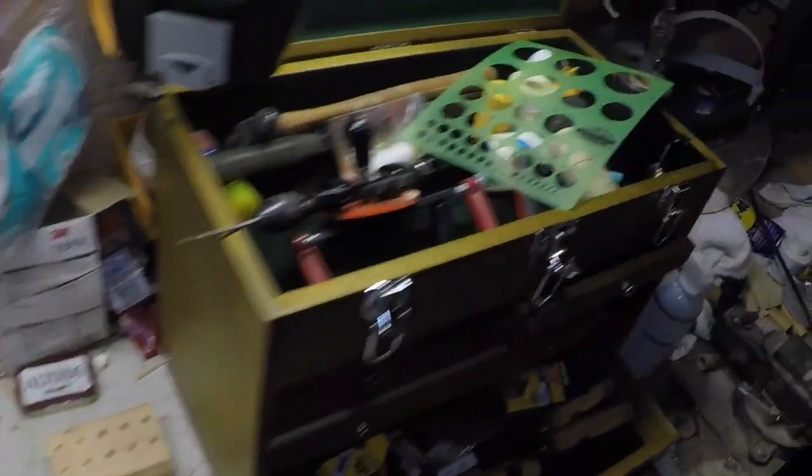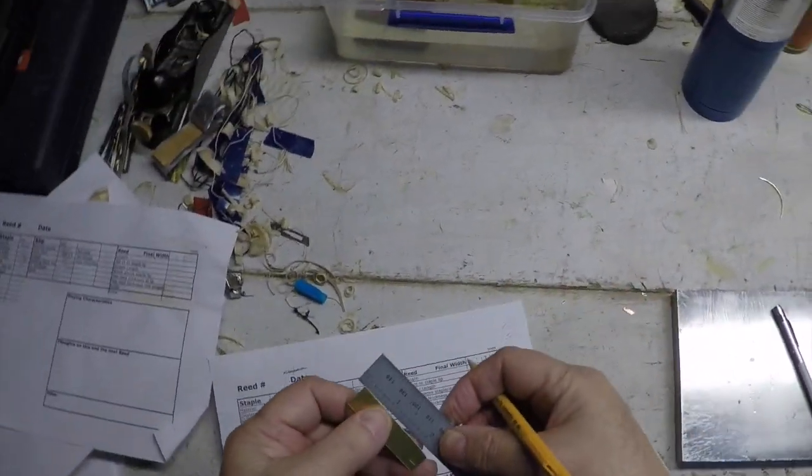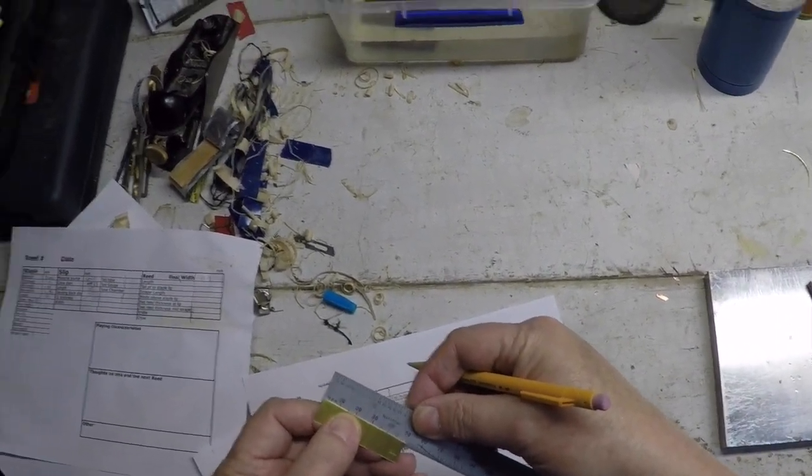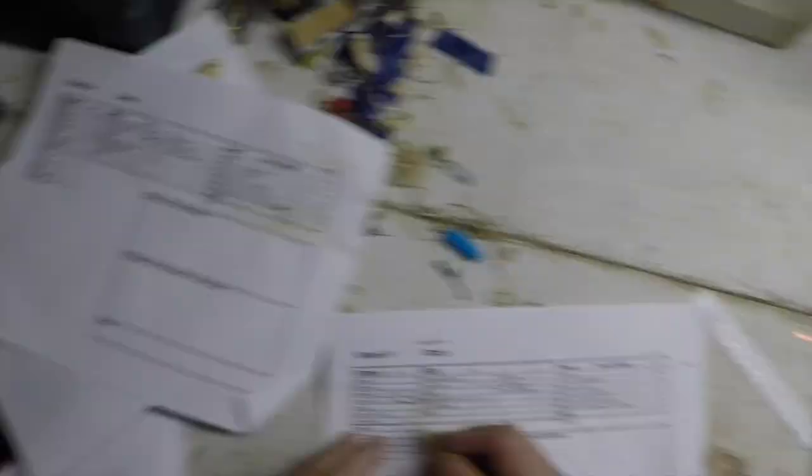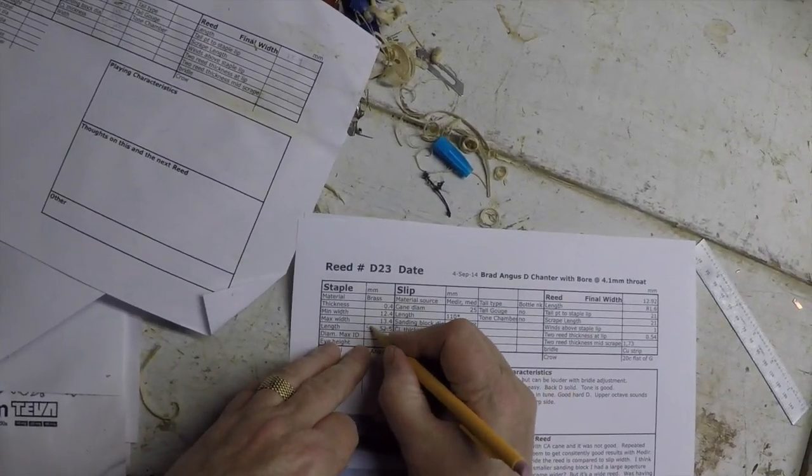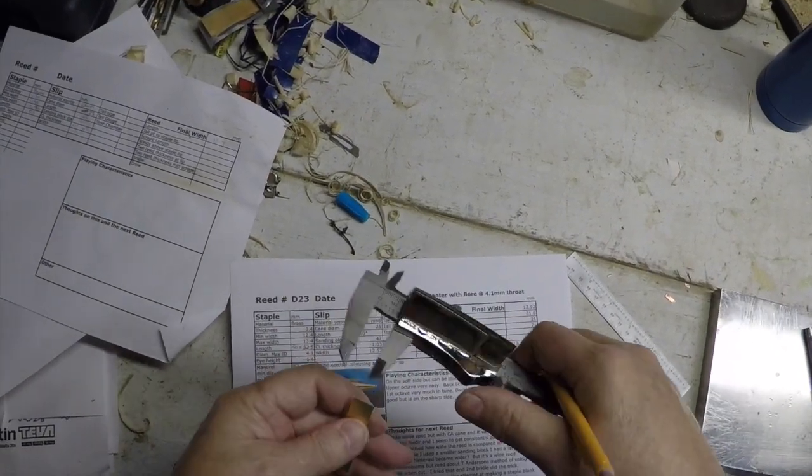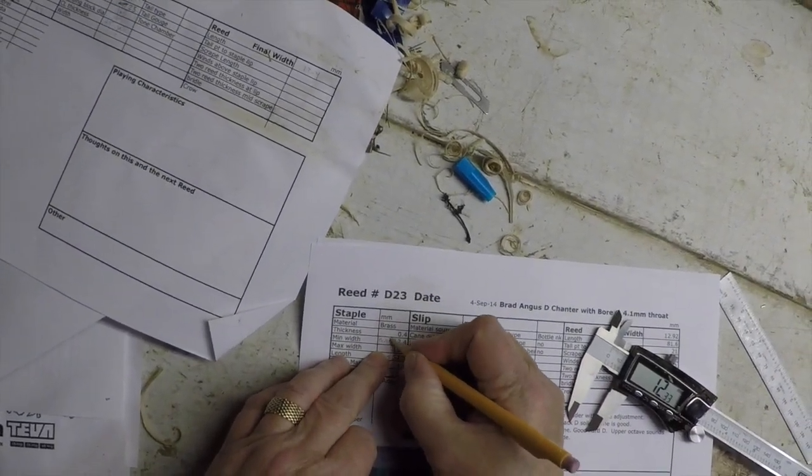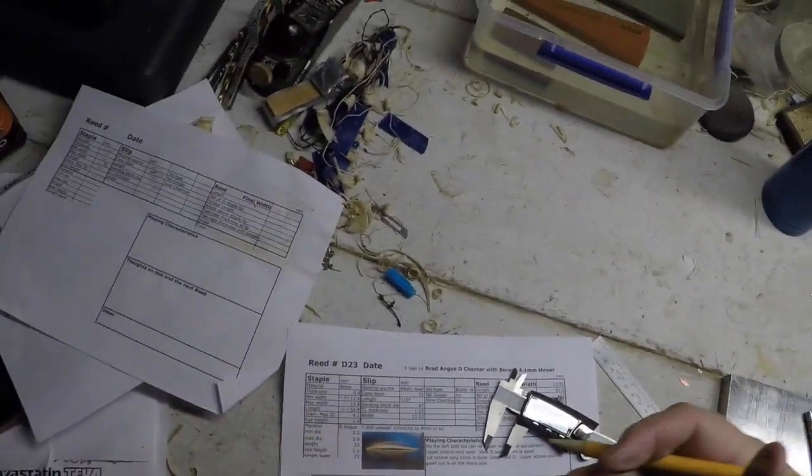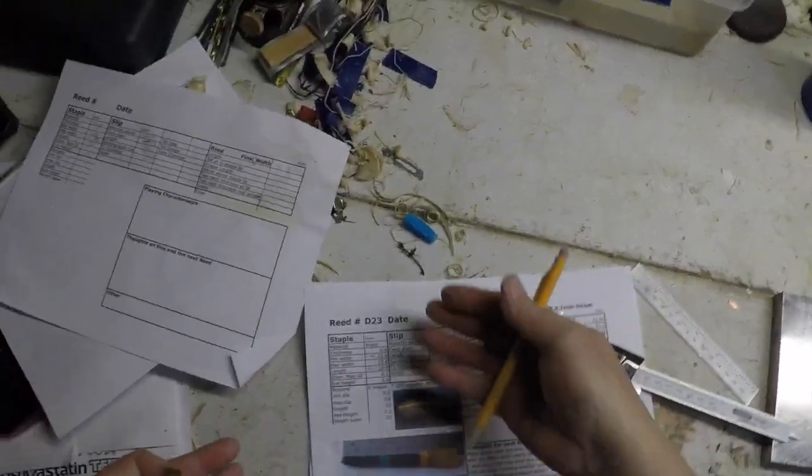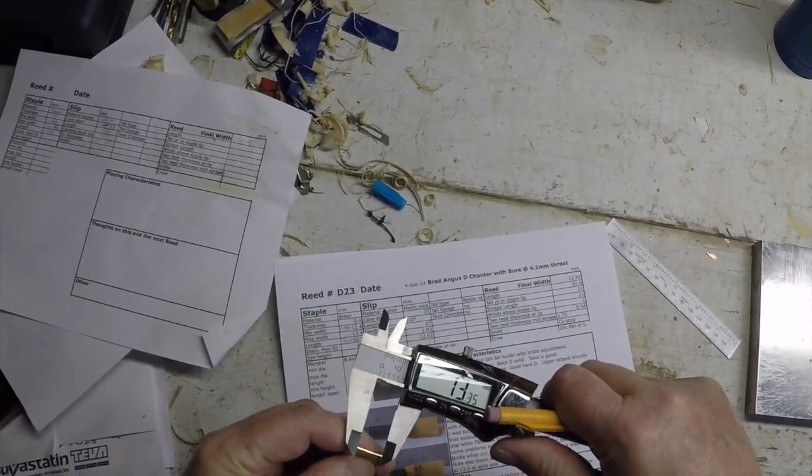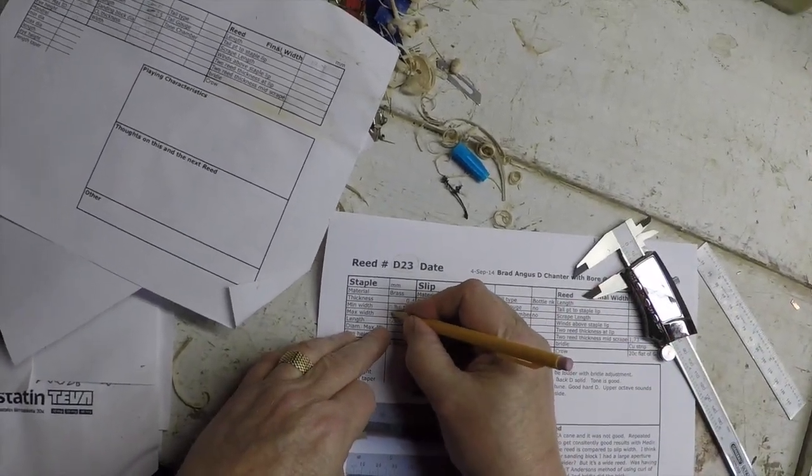While I'm making this I will mark up and keep a record. The length is around 50.5, and the min diameter is 12.34. When I'm all done, assuming this is a good one, I'll call it D24 and then I'll put in the new dimensions. 13.35, so that's pretty close.